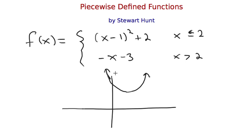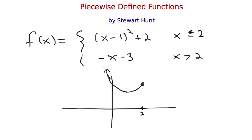That's what it looks like for all values of x. But this parabola is only valid for values of x less than or equal to 2. So where x equals 2, I erase the part to the right of 2 — I'm just taking the left-hand piece starting at 2. Since it says x less than or equal to 2, I put a solid circle there to indicate to the reader that the value of the function at 2 is given by that point. That's the first piece of the function.